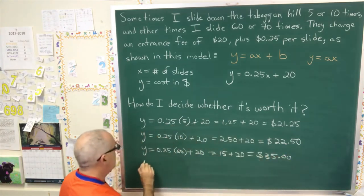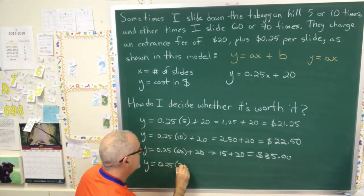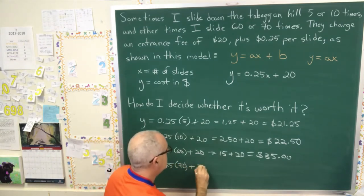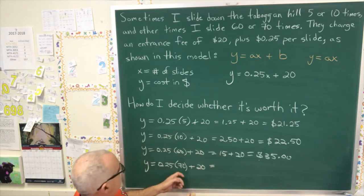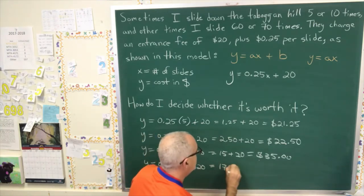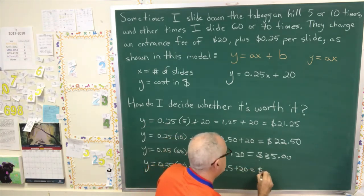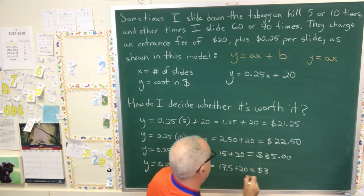And for 70, y equals 0.25 times 70 plus 20, which is 17.5 plus 20, which is $37.50.